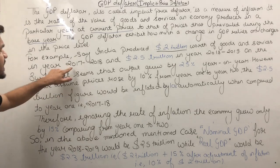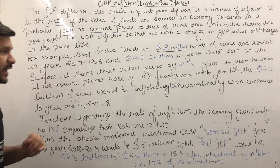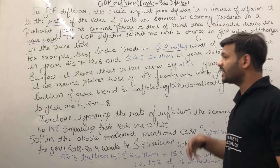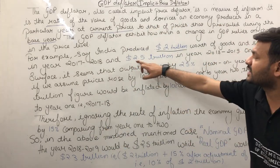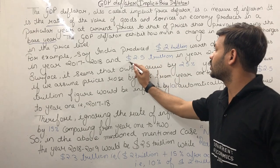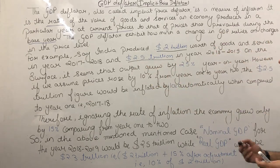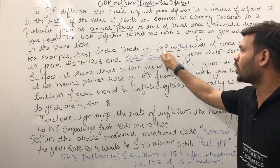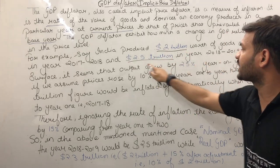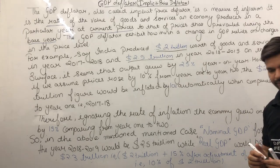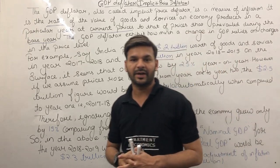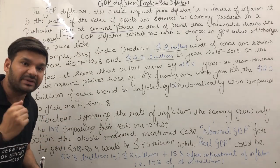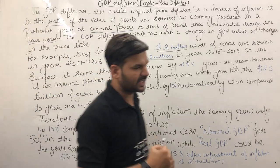For example, in the United States for the year 2017-18, the GDP was $2 trillion in goods and services. In 2018-19, it came to $2.5 trillion. So we have no separation yet between real GDP and nominal GDP. Now we will use the deflator concept to understand this.